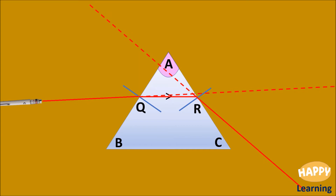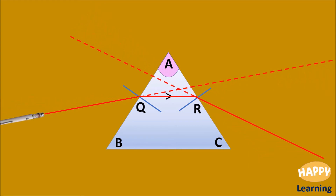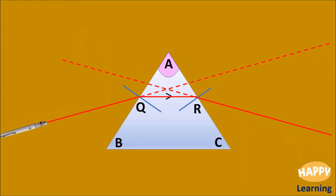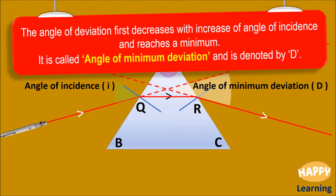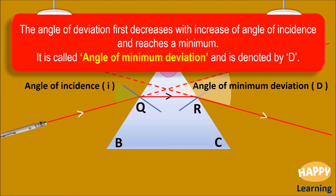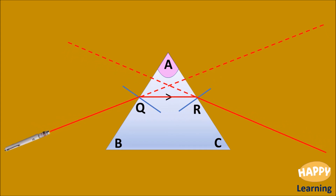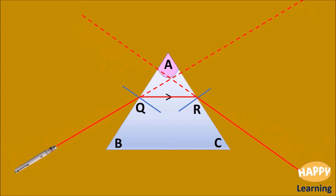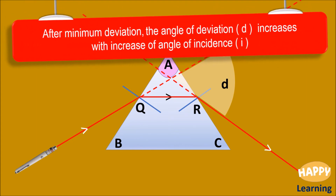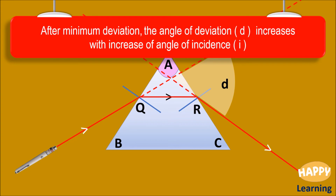If you increase the angle of incidence at the first refracting surface, the angle of deviation decreases and reaches a minimum. The angle of deviation first decreases with the increase of angle of incidence and reaches a minimum. It is called angle of minimum deviation and is denoted by capital D. On further increasing the angle of incidence, the angle of deviation increases.